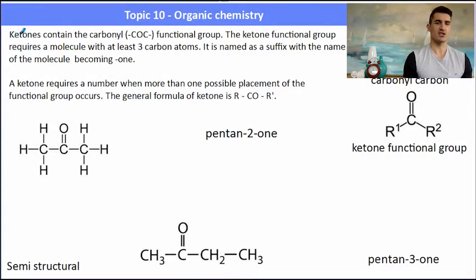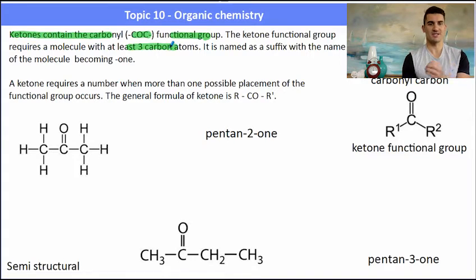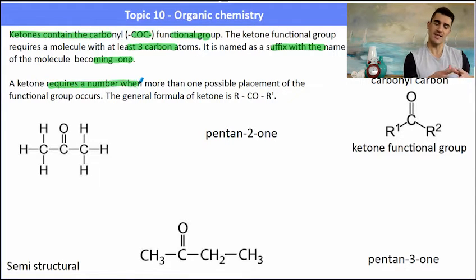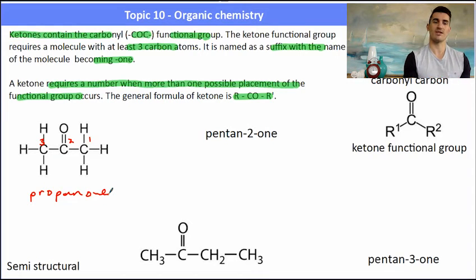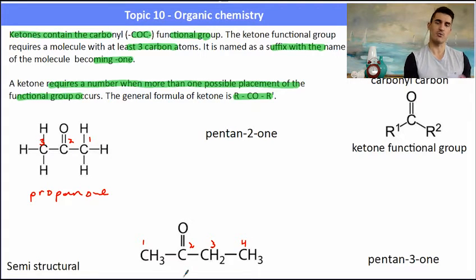The third one for today is a ketone. A ketone contains the carbonyl functional group, which is a C=O within a COC arrangement. The ketone functional group requires at least three carbon atoms, and the suffix becomes '-one'. The carbonyl functional group is a carbon double-bonded to an oxygen. Here this first one has three carbons — our functional group is right in the middle. We don't need a number for this; it's just called propan-1-one because there's only one spot for that carbonyl group. In the second example we have four carbons but again only one spot, so this would be butan-2-one.